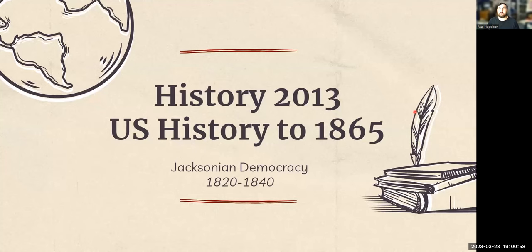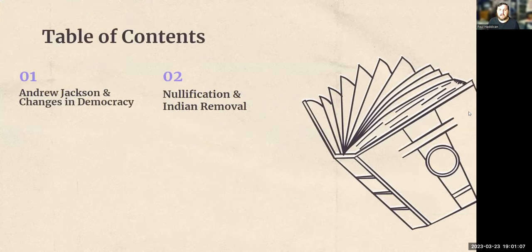Hello everyone, and welcome to Lecture 10 for Jacksonian Democracy. Today we're going to be covering the periods 1820 to 1840. We've got two big high points: Andrew Jackson and Changes in Democracy, and then Nullification and Indian Removal.